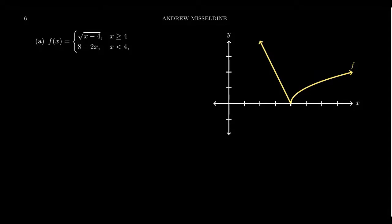Since piecewise functions are made from pieces of other ones, we have to specify which domain applies to which part. So look at what's on the screen right now. This is a piecewise function with two parts. f(x) is given as the square root of x minus 4, and 8 minus 2x. The radical function applies when x is greater than or equal to 4, and the linear function applies when x is less than 4.